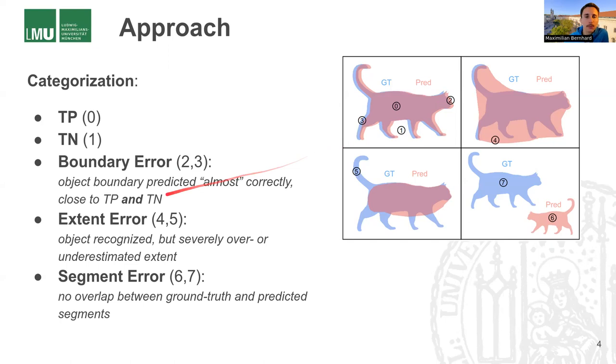A little bit more severe than that is our second category, the extent errors. Here the model recognized an object or a segment roughly correct, but the extent was simply mispredicted. So here, the pixel four or here pixel five, these are errors that occur quite far from the boundaries.